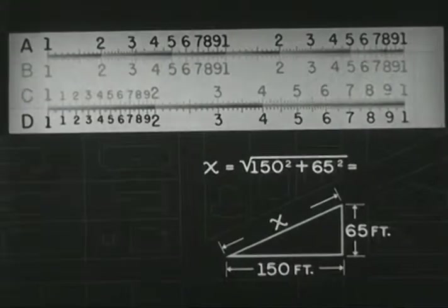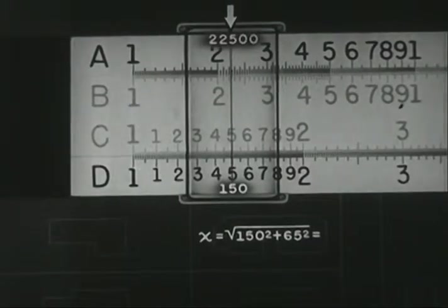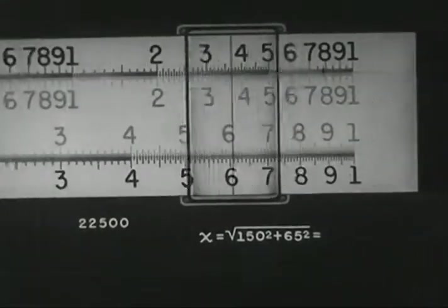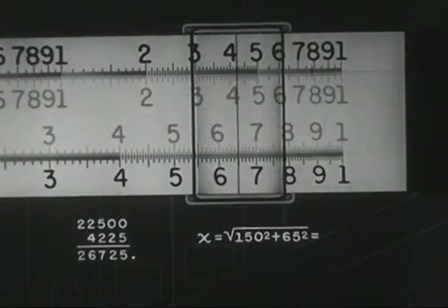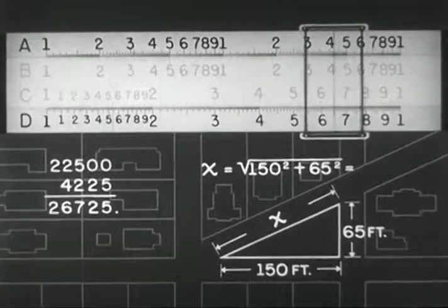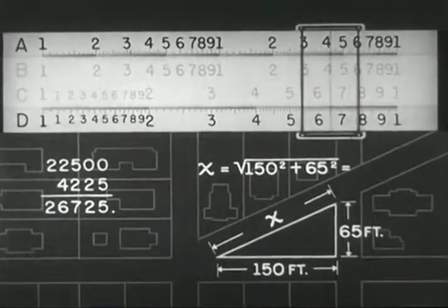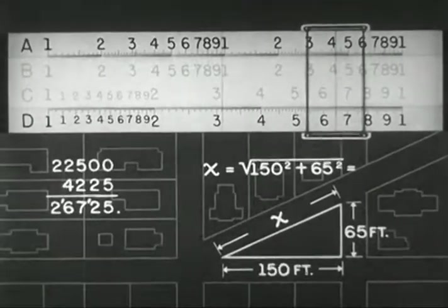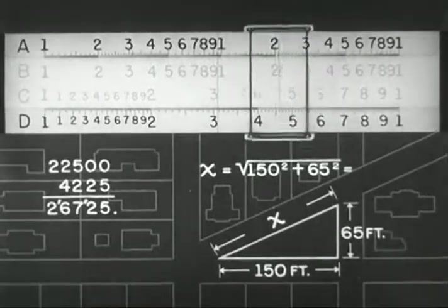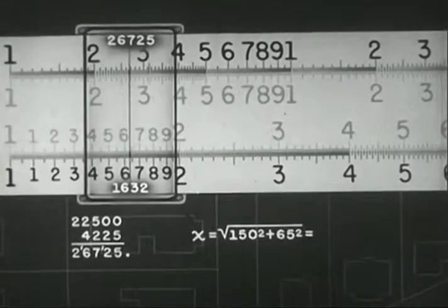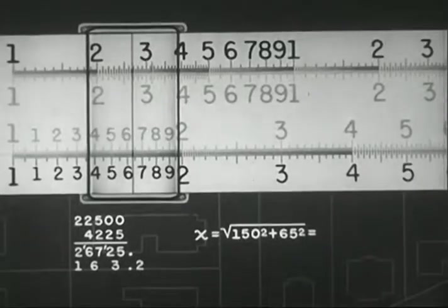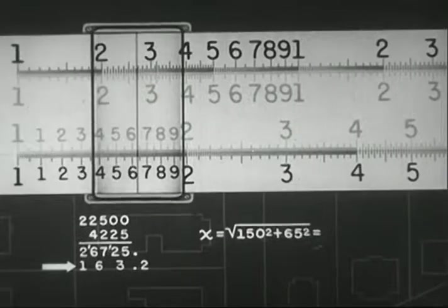We square 150 and obtain 22,500. Square 65 and put down 4,225. Adding these, we get 26,725. The square root of this figure will be the hypotenuse x. By marking off, we see we must use the left side. Placing the hairline on the estimated position for 26725 on A, we read 1632 on D. By lining up the figures thus, we find that x equals 163.2.